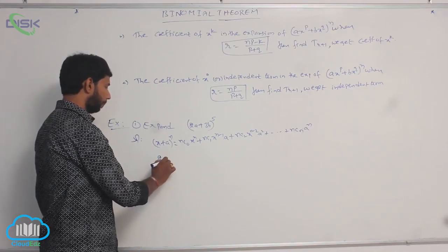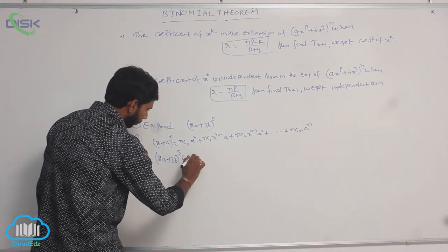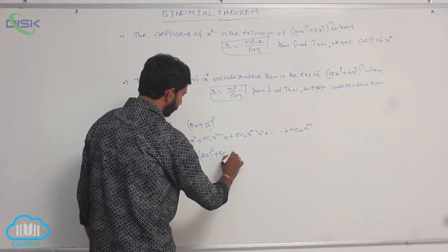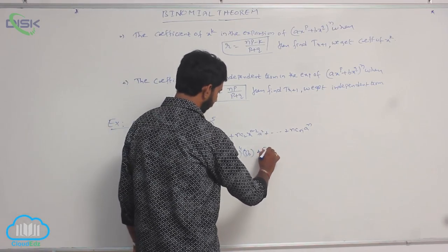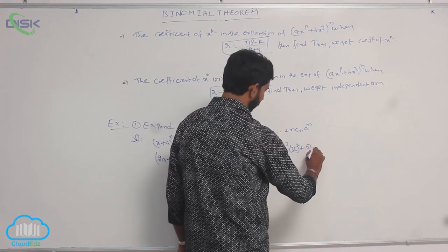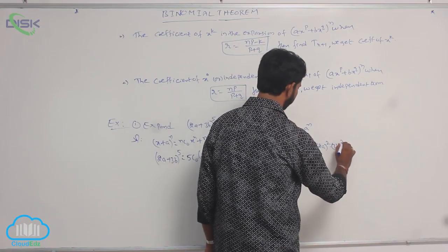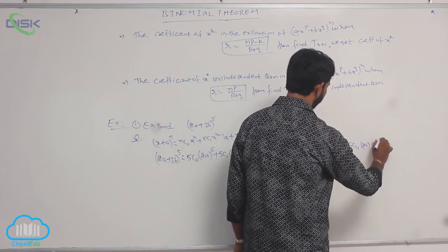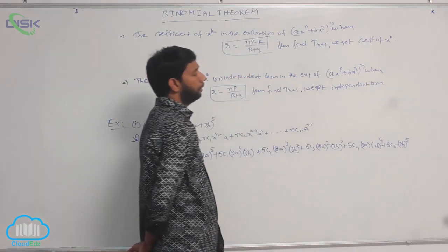Here it is of the form (2a plus 3b) whole power 5, where n equals 5. That is: 5C0 times (2a) power 5, plus 5C1 times (2a) power 4 times (3b), plus 5C2 times (2a) power 3 times (3b) power 2, plus 5C3 times (2a) power 2 times (3b) power 3, plus 5C4 times (2a) times (3b) power 4, plus 5C5 times (3b) power 5.